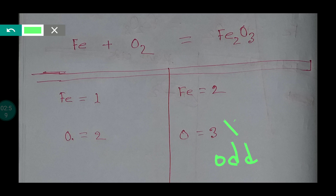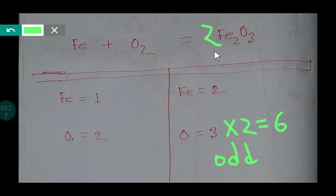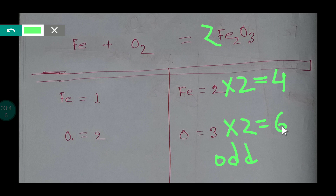Since we have an odd number of oxygen, we want to make it even. To do so, we multiply the Fe₂O₃ by 2, giving us 6 oxygen on the right side. When we place 2 in front of Fe₂O₃, the iron on the right becomes 4. So we must also multiply the Fe on the left by 4 to balance iron.